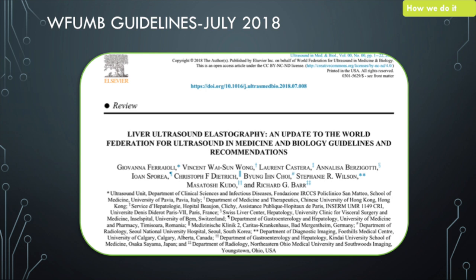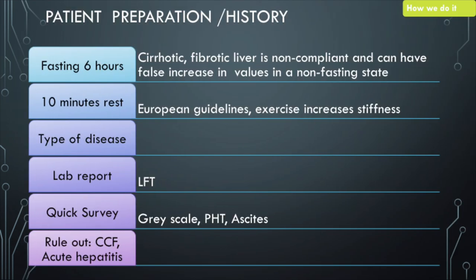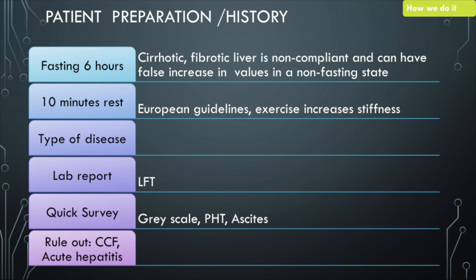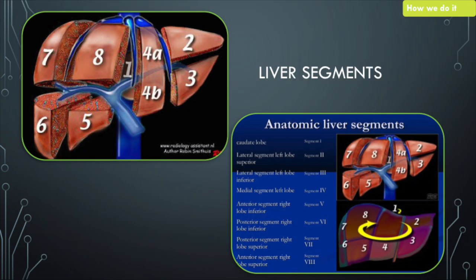We have the WUFOM guidelines from July 2018 — I would recommend everyone to go online and check these out as they give very good guidance on how to perform and interpret elastography. There are a few requisites: the patient should be fasting for six hours; don't scan immediately after the patient arrives — let them wait a little while. We need to know the type of disease, assess lab reports and LFTs, do a quick ultrasound survey for portal hypertension and ascites, and importantly rule out CCF or acute hepatitis. As for which segments to analyze, we leave out the left lobe of the liver as it gets cardiac pulsation artifacts. We analyze segments 7, 8, and 5, as per the guidelines.